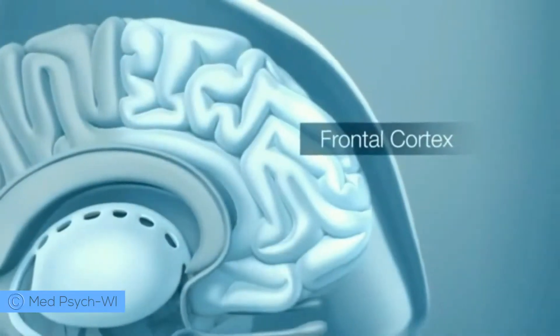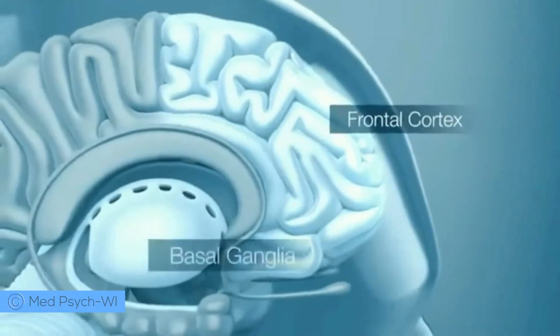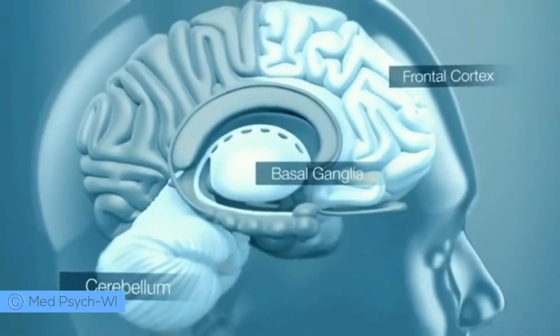The frontal cortex, along with other major parts of the brain, are smaller in children with ADHD than in those without.